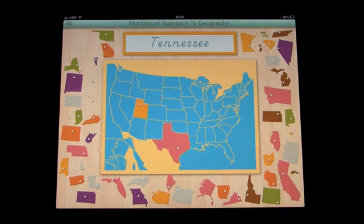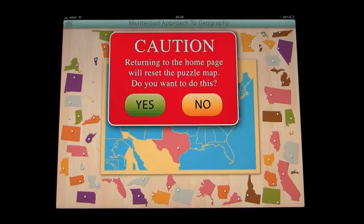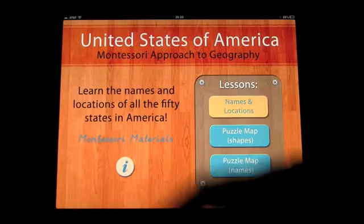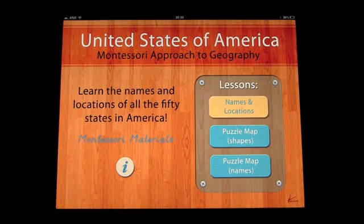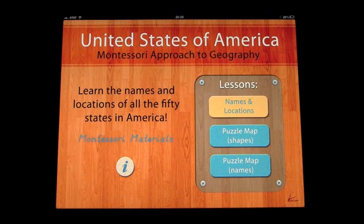This is the Montessori approach to geography. Going back, you can reset the map. It's names and locations, the puzzle map using shapes, and the puzzle map using names — United States of America, Montessori approach to geography.